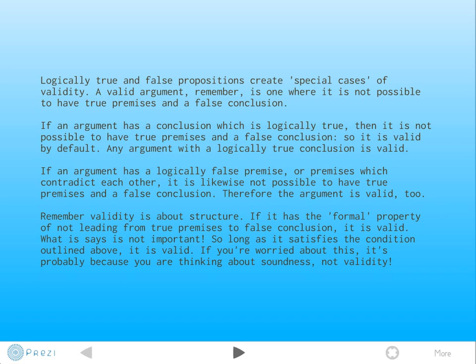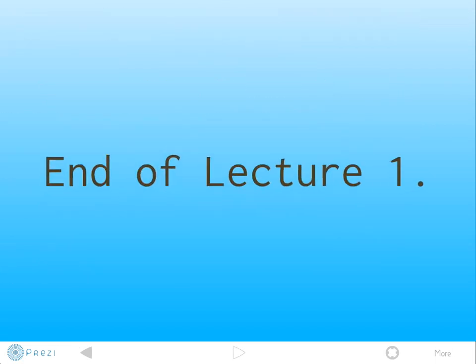If an argument has a logically false premise or premises which contradict each other, it's likewise not possible to have true premises and a false conclusion. So the argument is also valid by default. Remember, validity is about structure. If it has this formal property of not leading from true premises to false conclusion, it's just going to be valid. In the first case, if the conclusion is always true, you can't move from true premises to a false conclusion. In the second case, if the premises are always false, you can't move from true premises to a false conclusion. What it says is not important. So long as it satisfies the condition outlined above, it's just going to be valid. And if you worry about this, it's probably because you're thinking about soundness, not validity. You're thinking about what the argument says, not what its structure is. These are the special cases of validity that reveal the kind of thinking we're going to have to do when dealing with this formal system. That's all I have for lecture one. I'll see you guys on Tuesday.